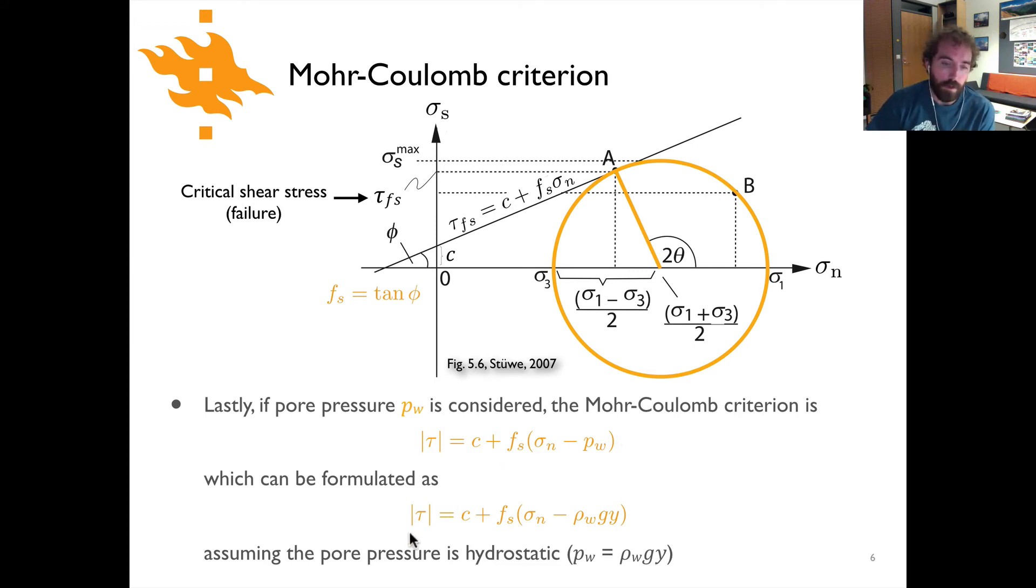So that's just a simple modification of our relationship. You could also formulate it this way where we have tau equal to C plus Fs times sigma n minus rho Gy, where we're making the assumption that our pore pressure is hydrostatic, and that may or may not be the case. If you have rocks that are compacting, if you have sedimentary rocks that are compacting in conditions where they are saturated with fluids and the pore spaces are filled with fluids, the compaction process will squeeze fluids out and the fluid pressures can go above hydrostatic in that case. But simply we can make the assumption in some cases that we have hydrostatic pressure and that's easy to deal with.